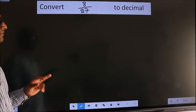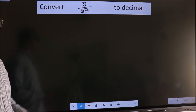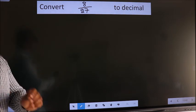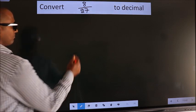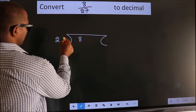Convert 8 by 27 to decimal. To convert this to decimal we have to divide, and to divide we should frame it in this way: 8 here, 27 here.